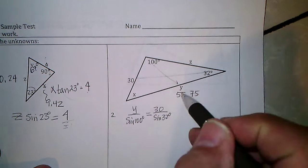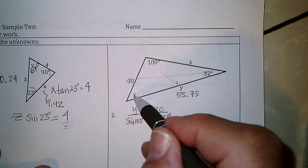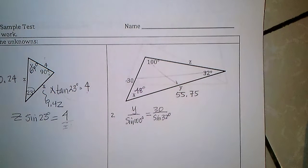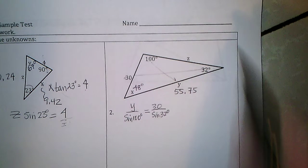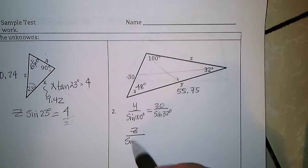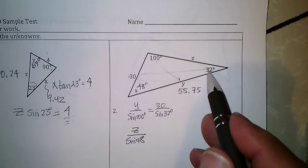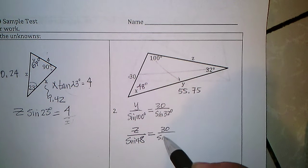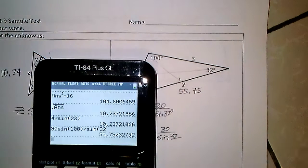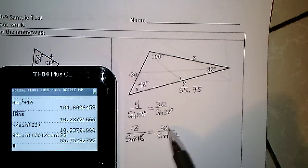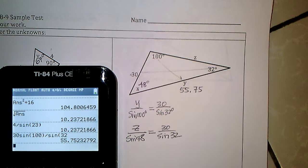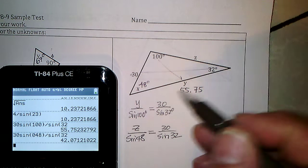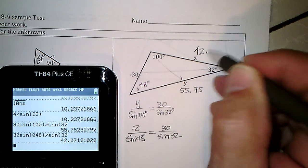I still need to find more. There are 180 degrees in a triangle, and I've used 132, so that leaves 48 degrees for angle x. Then I can find z by setting z over sine(48) equal to 30 over sine(32). Doing the same calculation but with sine(48) instead of sine(100), I get z to be 42.07.